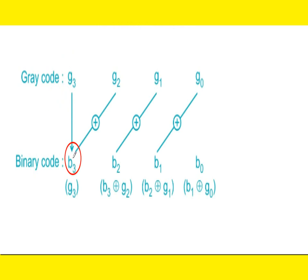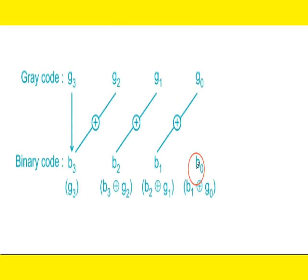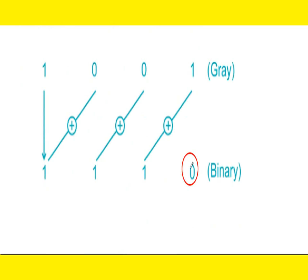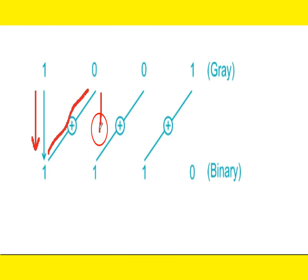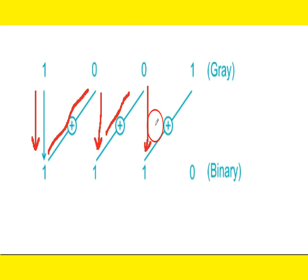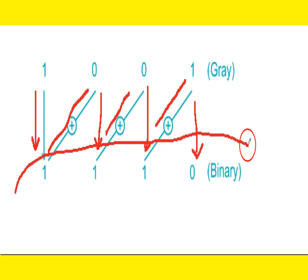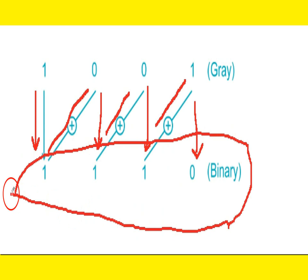Now, Grey code to binary code conversion. The first bit: 1 goes as 1. Then 1 plus 0 gives 1. 1 plus 0 gives 1. 1 plus 1 gives 0. So this is the resulting binary code.